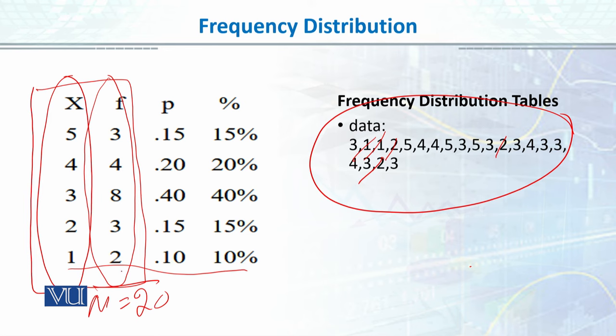For example, if the total observations are 20 scores, and the data points are 20, it means that N is 20. If you want to calculate the proportion for this particular score, you will divide 2 by 20, which is 0.1, which we have written.